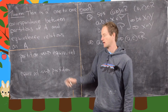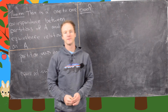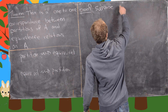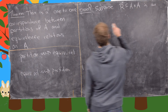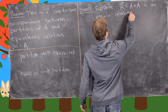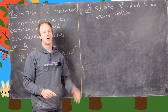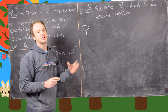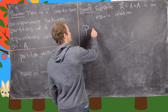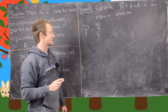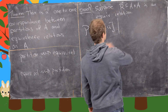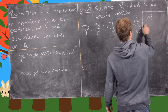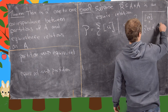Now we want to start with an equivalence relation and form a partition. Suppose R, a subset of A × A, is an equivalence relation. We set P equal to the set of all equivalence classes under this equivalence relation — that is, P = {[a] : a ∈ A}, where [a] = {b ∈ A : a is related to b}. That's called the equivalence class of a.